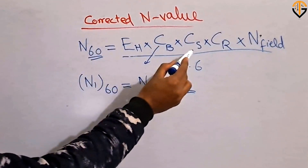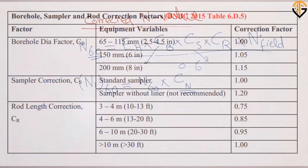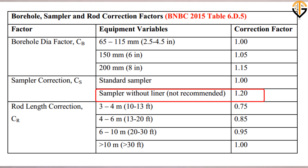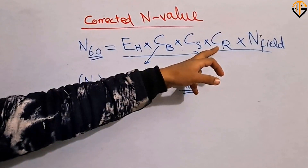For the sampler correction C_S: if your sampler is lined, no correction is required. If the sampler used is without a liner, you need to apply a correction of 1.2 as shown in the table.